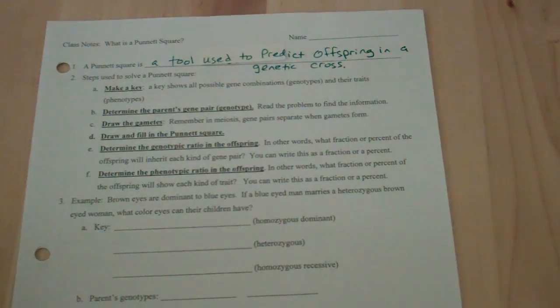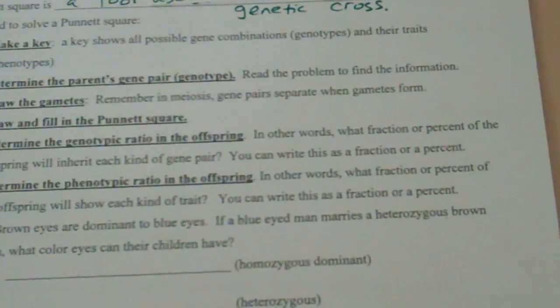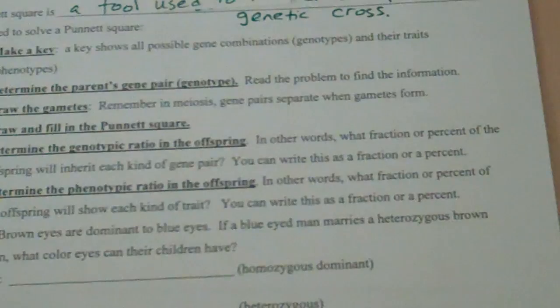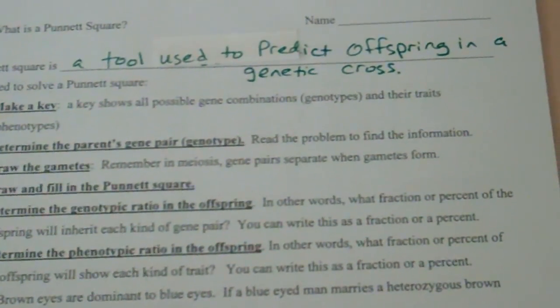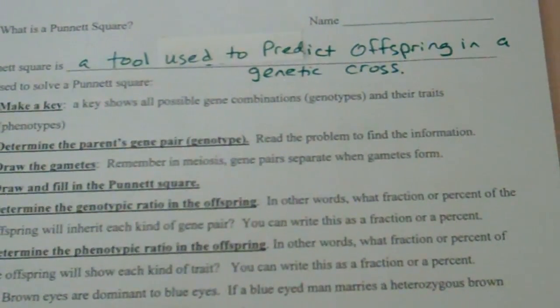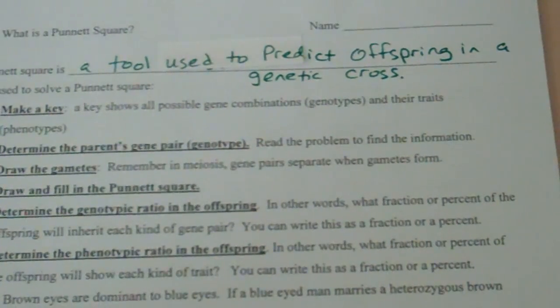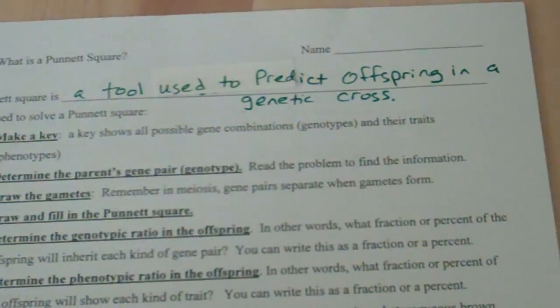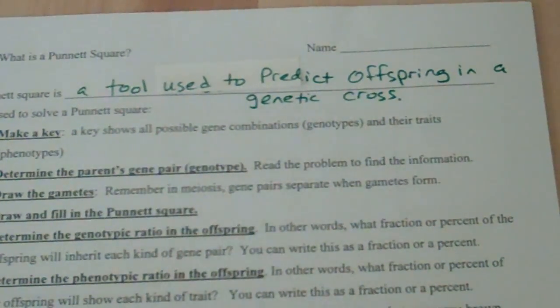So this is your class notes, and I know it's a little bit hard to see, but just follow along and try to listen. We want to start out with the definition of Punnett Square. A Punnett Square is actually a mathematical tool that we use to predict offspring in a genetic cross.